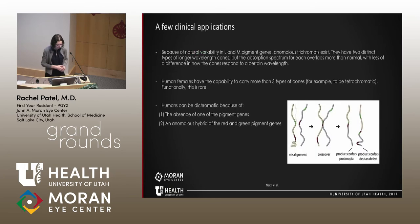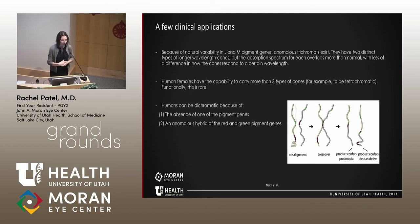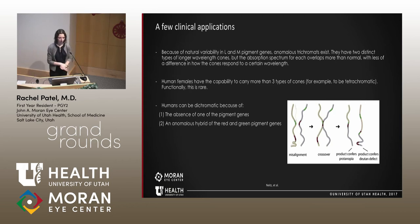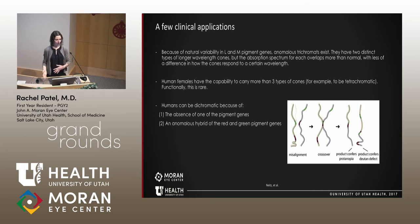Now for some clinical applications. Because just a few amino acid changes determine the spectral sensitivity difference between L and M pigments, there is natural variability in the human population. Anomalous trichromats have two different types of pigment genes, but their absorption wavelength peaks may overlap more than normal — they are technically trichromatic but don't have quite the same spectral range as someone with normal M and L pigments.